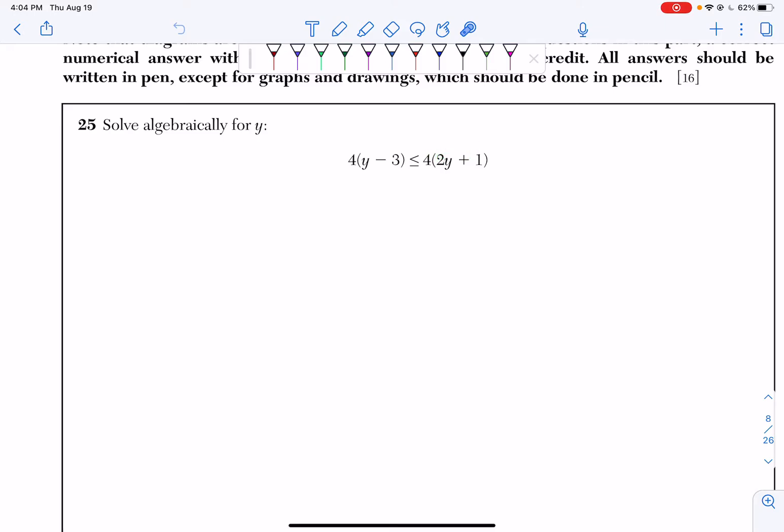So what I'm going to do is write down our PCVNA technique where P stands for parentheses, C stands for combined like terms, V stands for your variables on one side, N for numbers on the other, and A attached number to your variable get rid of by dividing.